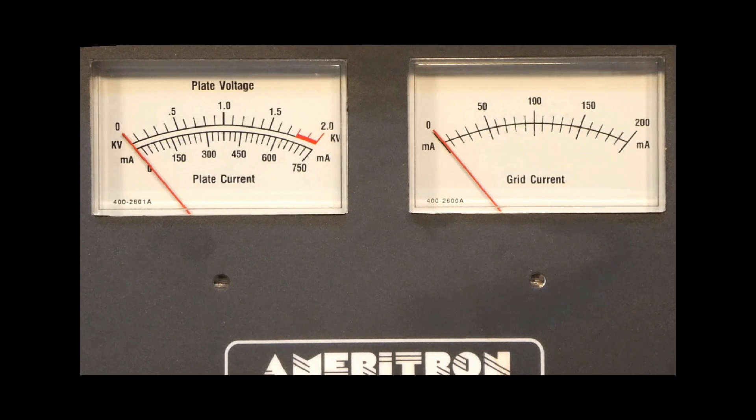Watch the grid and the plate current meters. This is with no RF excitation into the amplifier. There's keyed, there's unkeyed, there's keyed, there's unkeyed. You notice that the grid current moves with the plate current meter—they move together about the same amount of deflection.